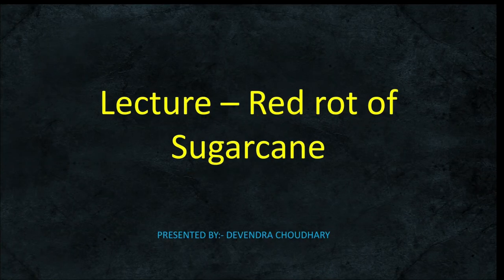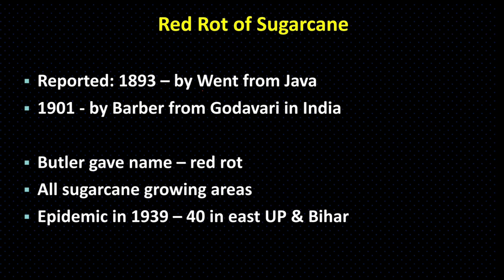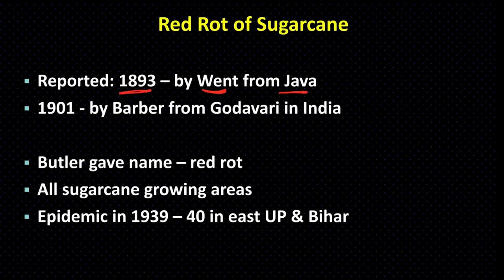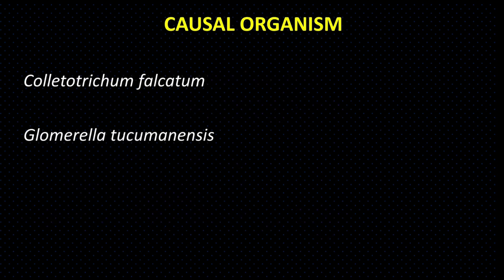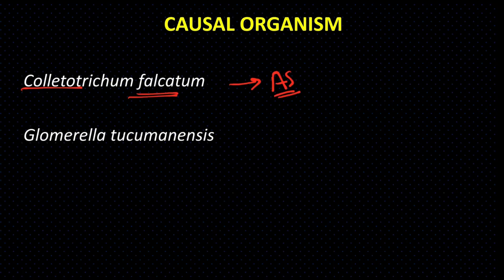Red rot of sugarcane was first reported by Wendt in Java in 1893. In 1901, Barber reported red rot from Godavari district in India. E.J. Butler gave the disease the name 'red rot.' This disease is most common in all sugarcane-growing areas in India. In 1939 to 1940, an epidemic was reported in Eastern UP and Bihar. The causal organism is Colletotrichum falcatum (asexual stage); the sexual stage is Glomerella tucumanensis.